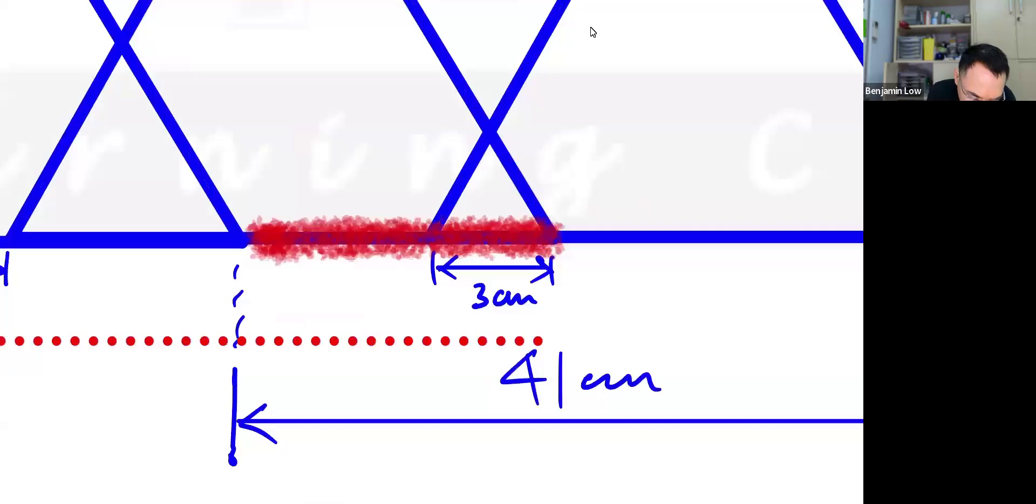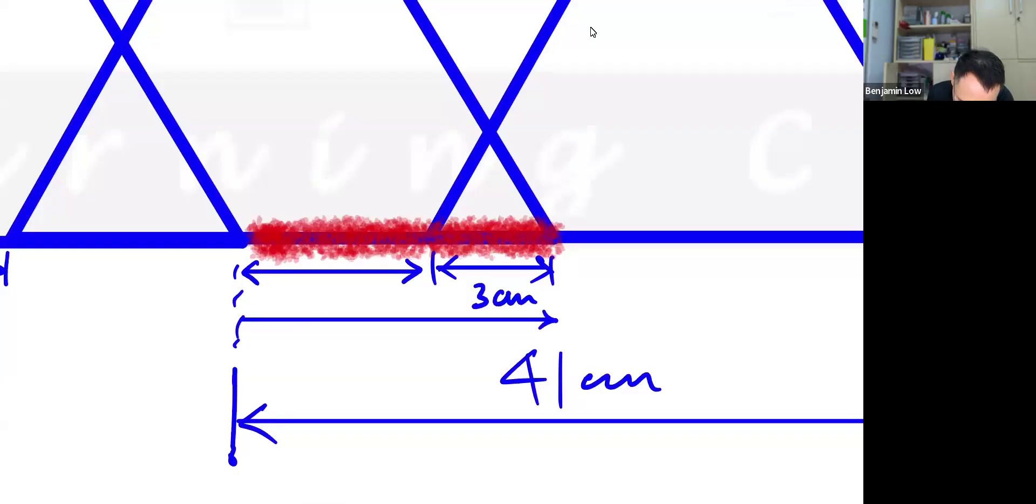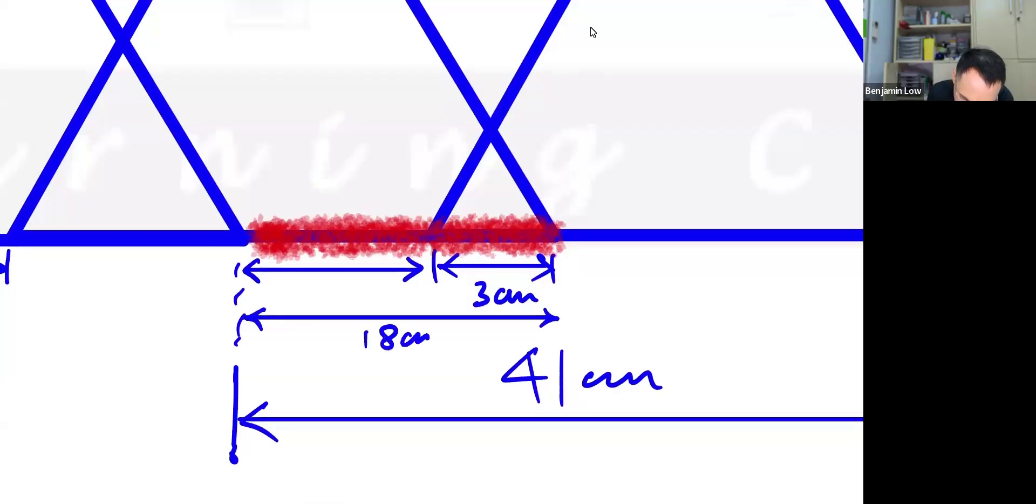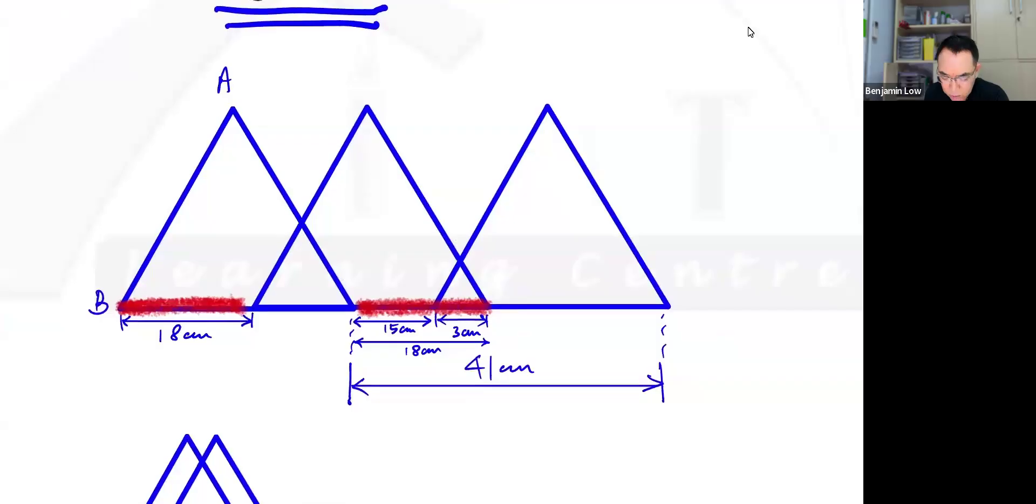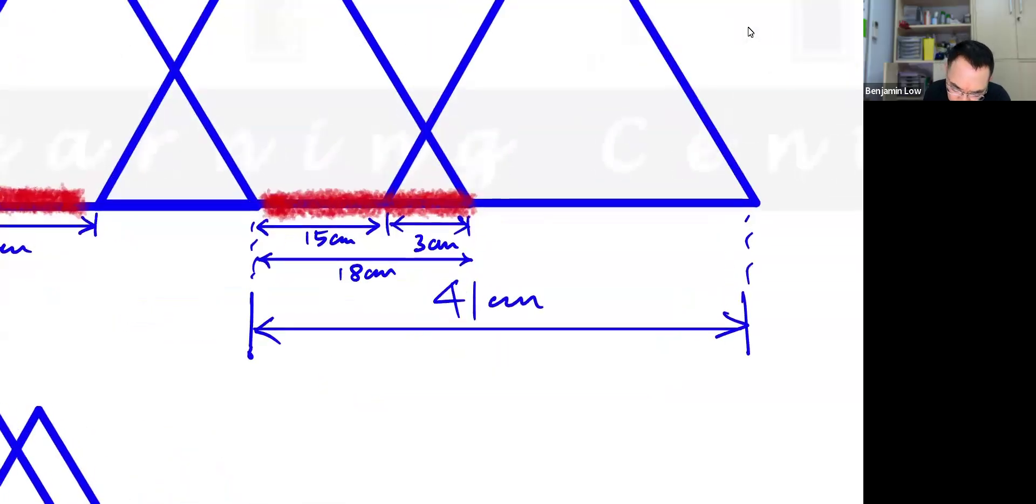then this would be how much? The answer is 15. Because if this is 18, then this has to be 15. So far, are you able to follow? If at any point you're not able to follow, you can always pause this recording and watch this part again. So if this is 15—this portion—and this is 41,